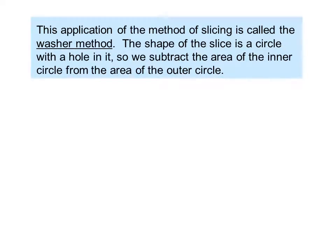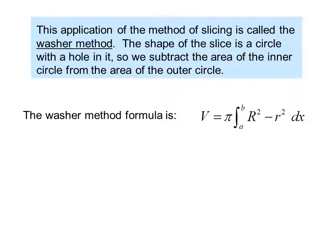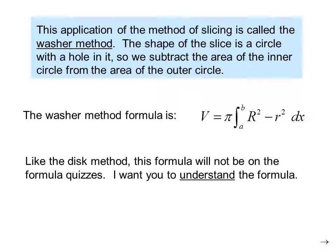This application of the method of slicing is called the washer method. The shape of the slice is a circle with a hole in it, so we subtract the area of the inner circle from the area of the outer circle. The washer method formula is v equals pi times the integral from a to b of big r squared minus little r squared dx. Like the disk method, this formula will not be on the formula quizzes. I want you to understand the formula.